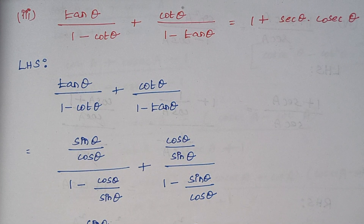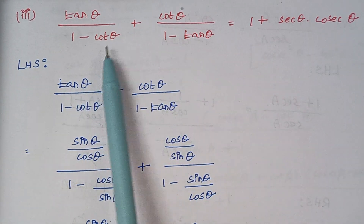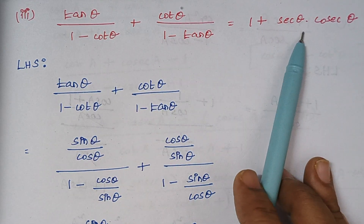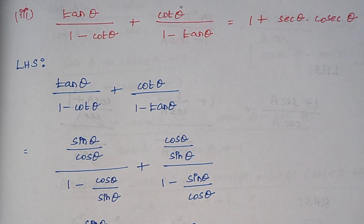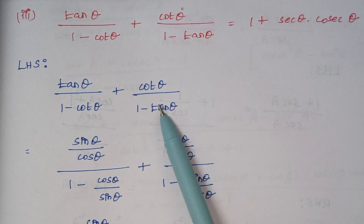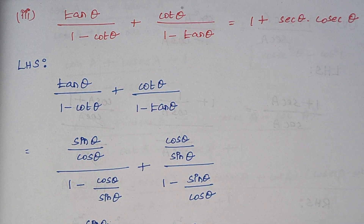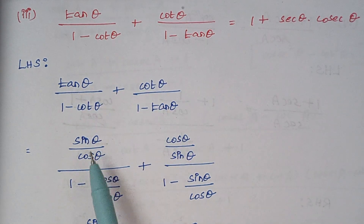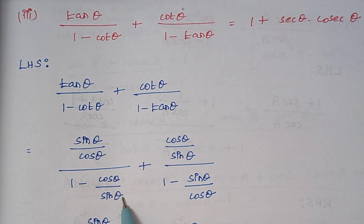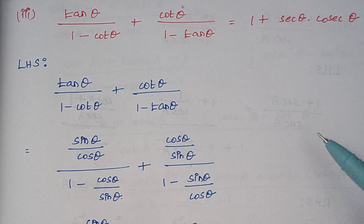So the third part of our problem number 5: tan theta by 1 minus cot theta, plus cot theta by 1 minus tan theta, is equal to 1 plus secant theta into cosecant theta. We are taking our LHS part. After writing LHS we represent tan and cot in the form of cos and sin: tan theta is sin theta by cos theta, divided by 1 minus cot theta which is cos theta by sin theta, and similarly cot theta is cos by sin and tan is sin by cos.